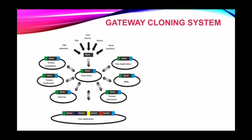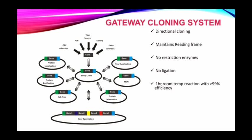In this figure, we can see the basic structure of the gateway cloning system, where we can take our desired gene of interest through PCR, a source gene library, gene synthesis, or other methods. We can produce an entry clone, and further with the help of LR clonase and BP clonase, produce our recombination sequence. The advantages of gateway cloning include directional cloning, maintenance of the reading frame, no restriction enzyme required, and no ligation required.